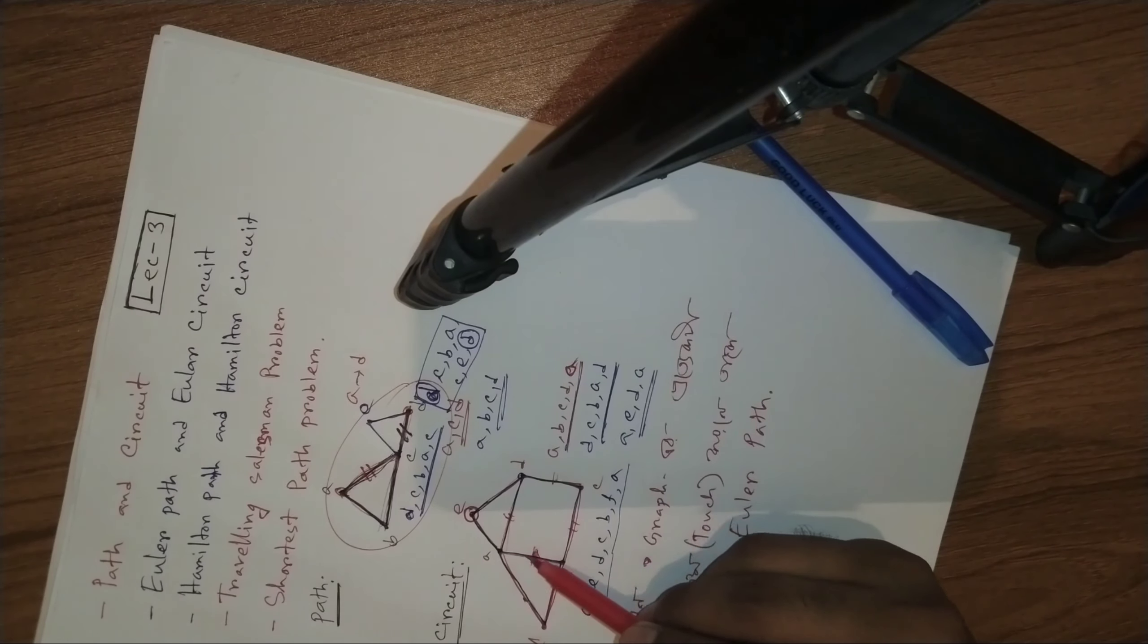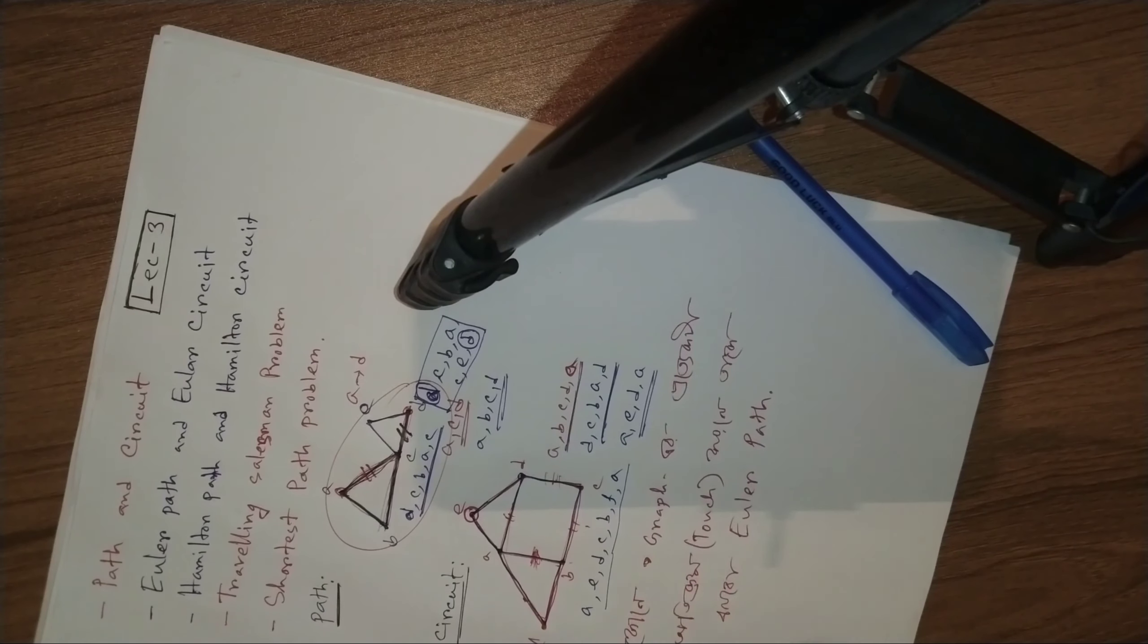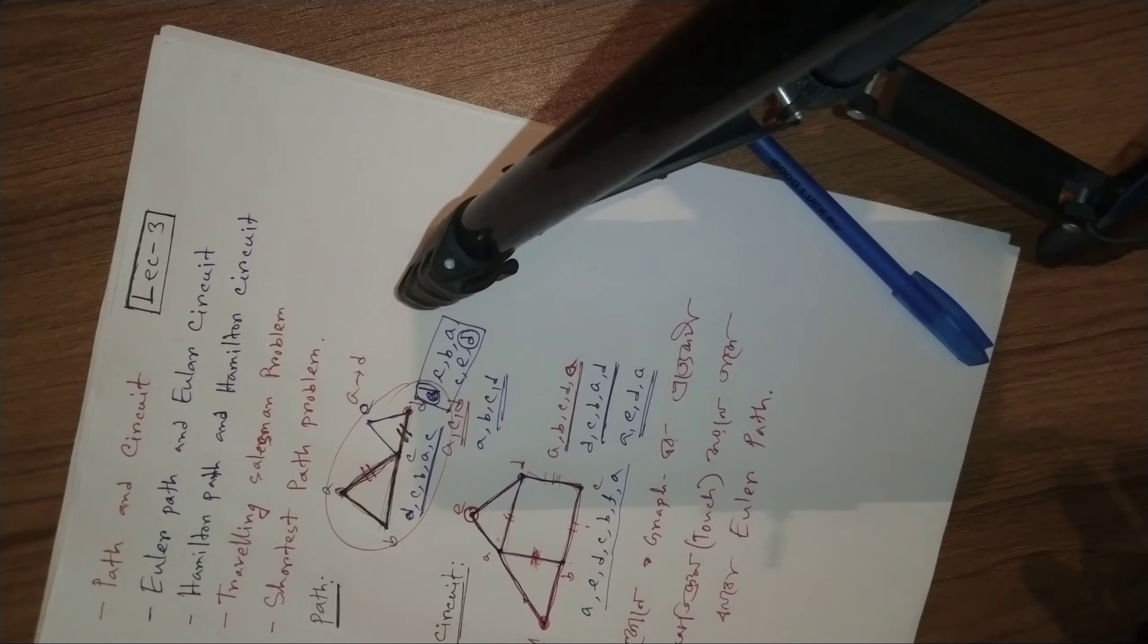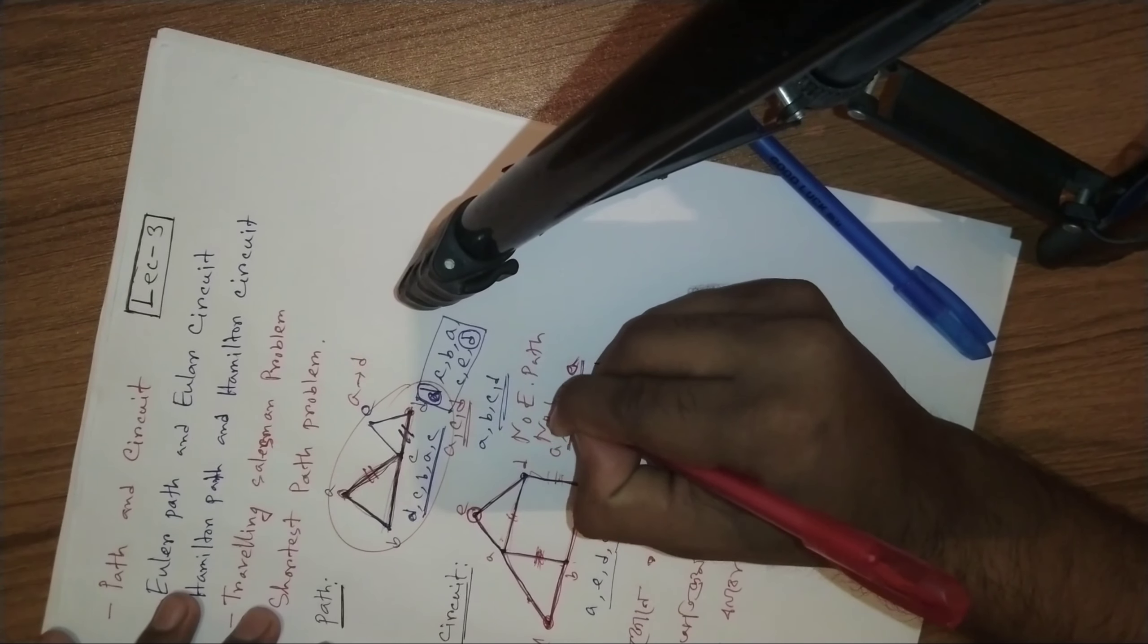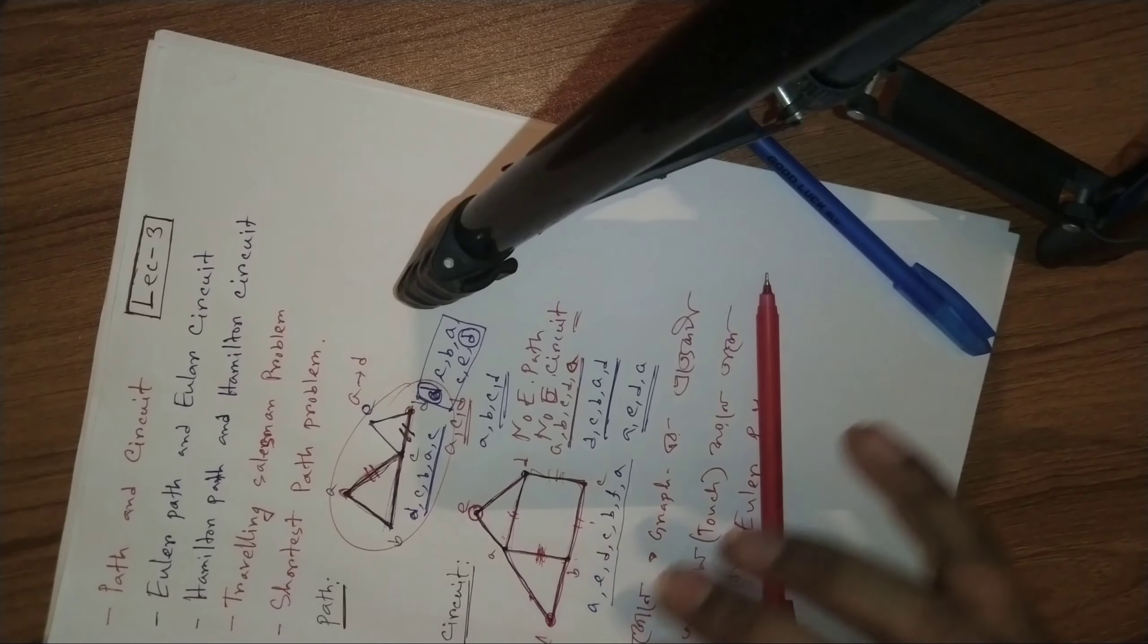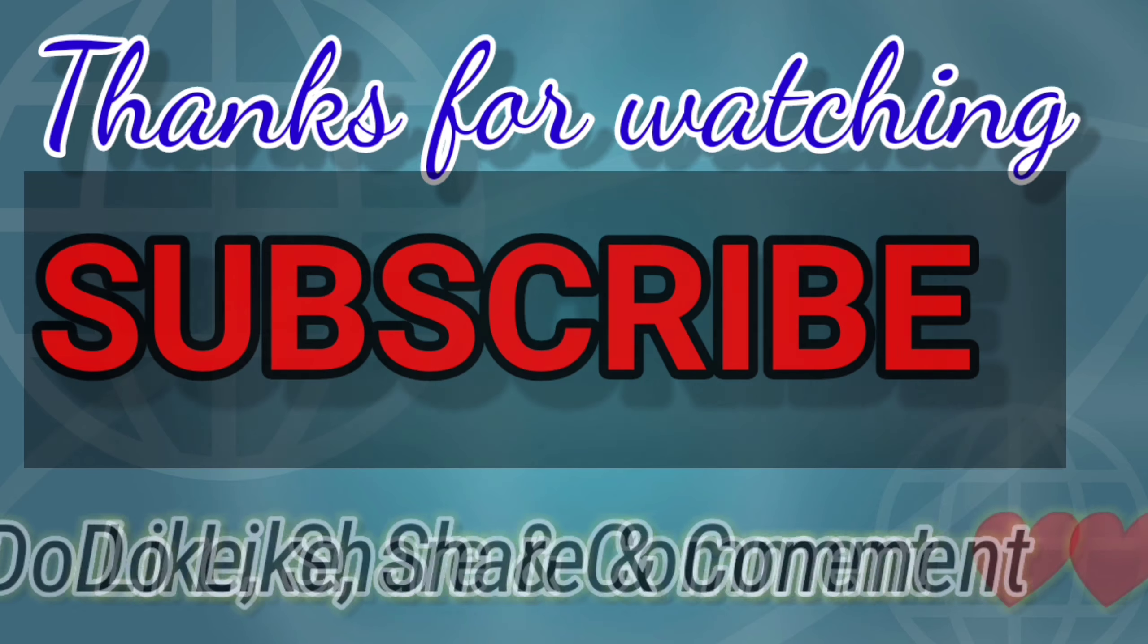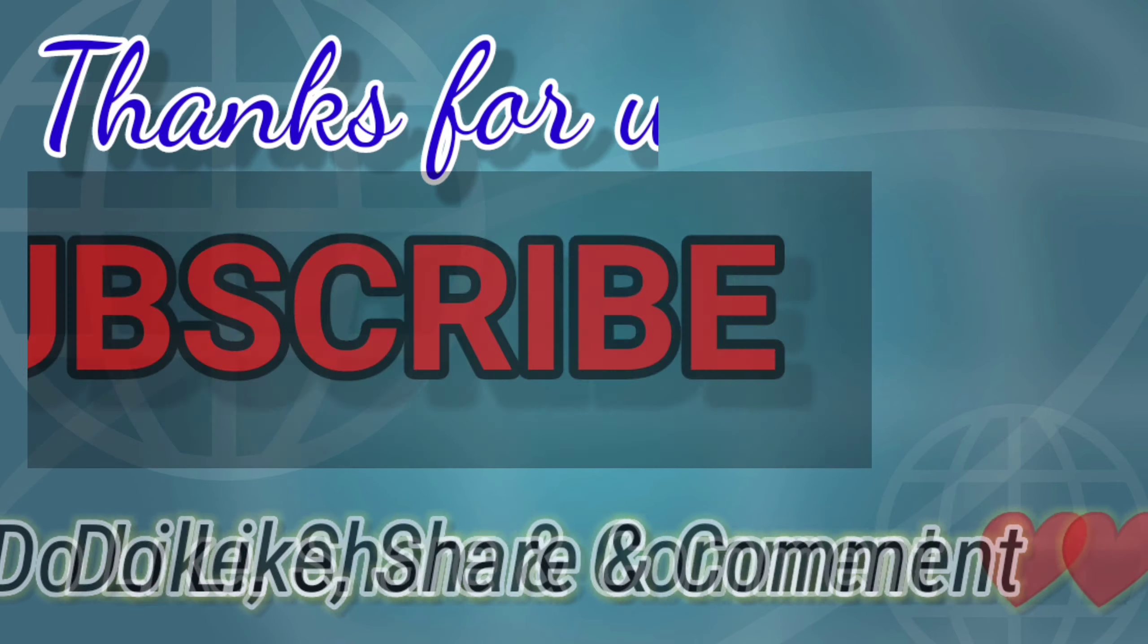Now there will be edges connecting vertices like CD. If the graph doesn't have the proper structure, it won't have an Euler path. For this graph, if there's no Euler path, then there's no Euler circuit. So this graph is the same case as having an Euler circuit.